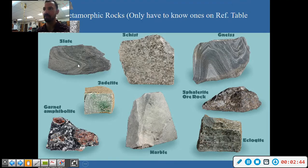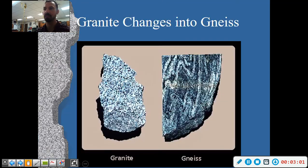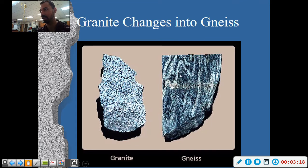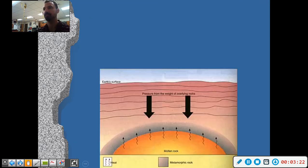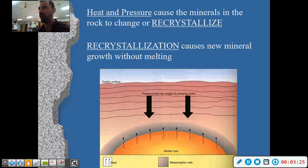Here are some metamorphic rocks with different characteristics: slate, schist, gneiss, jadeite, garnet, marble, and eclogite. Granite, which you remember as an igneous rock, changes into gneiss. The crystals actually get aligned into what we call bands — this is called banding — and you can see dark and light stripes in the rock. Heat and pressure cause the minerals to change or recrystallize, causing new mineral growth without melting, and the resulting product is a metamorphic rock.